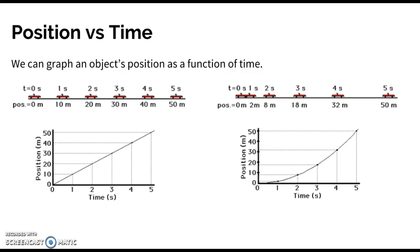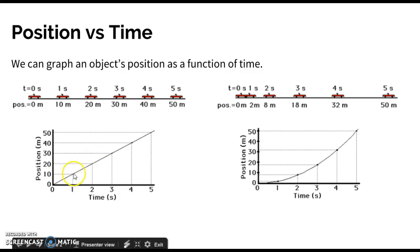If we graph from this motion diagram into a position versus time graph, we can put data points for each of those positions. At time zero, we're at position zero; at one second, we're at 10 meters; at two seconds, we're at 20 meters, and so on. We draw a best fit line and see that it's a straight line that fits this data trend.